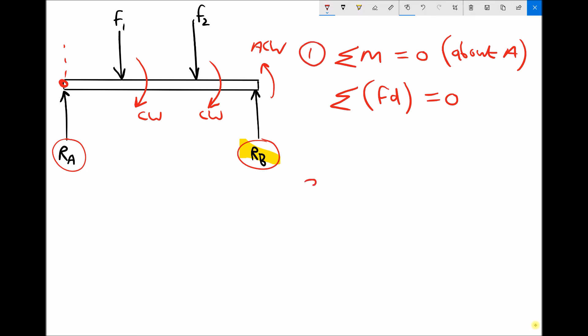Then we move on to our second condition to find the other support. The second condition says that the sum of the forces equals zero, or said a different way, the forces pushing down equal the forces pushing up. When we get to this stage we know F1 and we know F2. Condition 1 has enabled us to find Rb, so the only unknown then is Ra. We'll have an equation that states that F1 plus F2 equals Ra plus Rb, and the only unknown in that equation will be Ra.